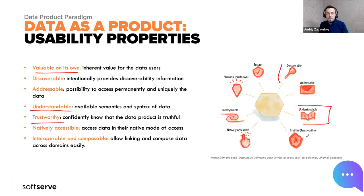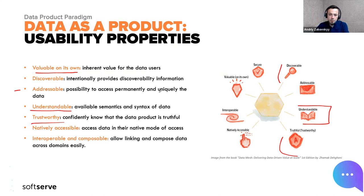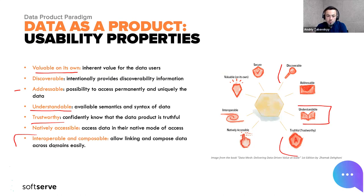It's also important to be able to trust a data product. This can be achieved using different approaches — for example, data lineage, to understand where the data comes from, what data sources were used, and what data quality rules are applied. Addressability means data products should not be abstract — you should be able to find and query them when needed to get the proper data. Finally, interoperability and composability: we should be able to combine data from different data products in a real, convenient way.